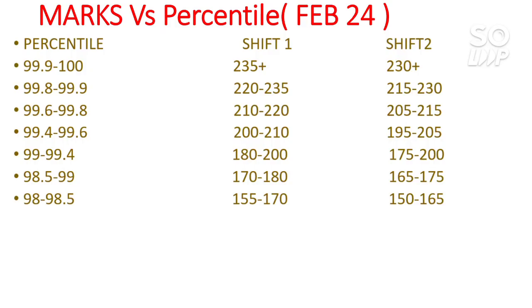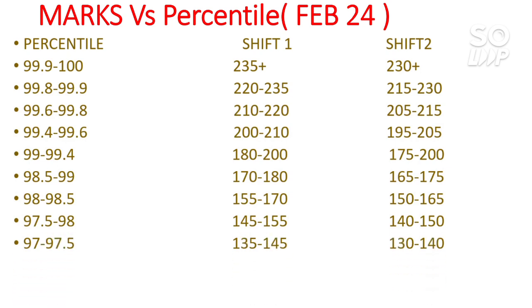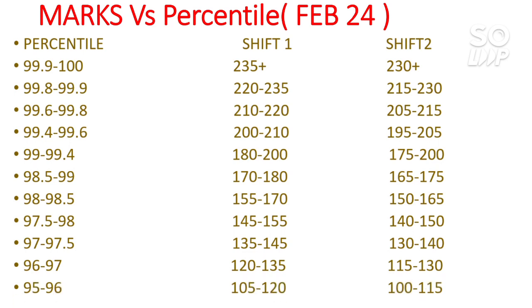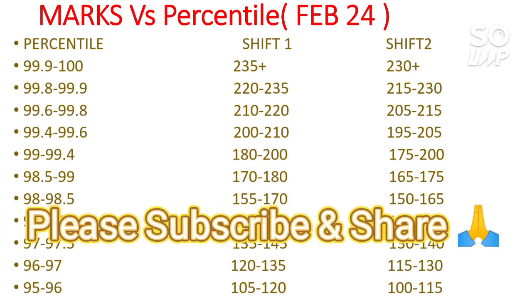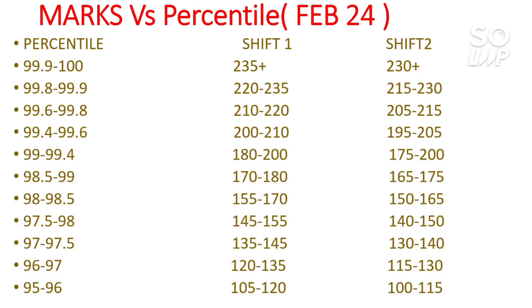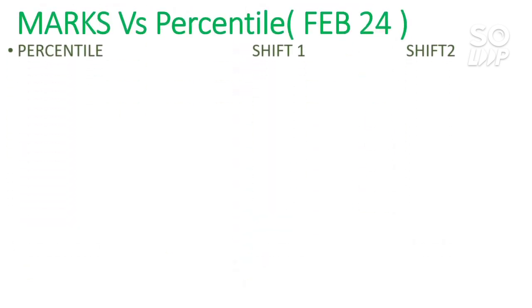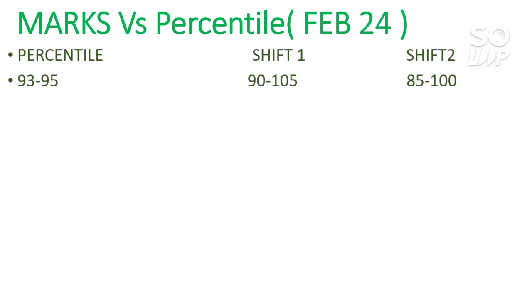For 97.5 to 98 percentile you need 145–155 marks, five marks less for Shift 2. For 97 to 97.5 you need 135–145 marks, again five marks less for Shift 2. For 95 to 96 percentile you need to score 105–120 marks. If you score something like 124 or 108 marks and don't find your score in this list, you can comment it down and I'll try to provide the exact percentile you may get.